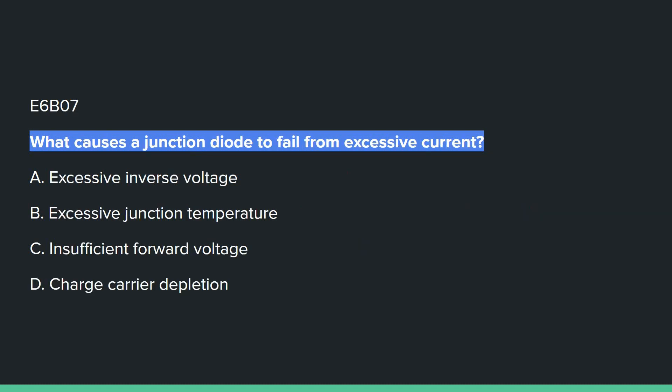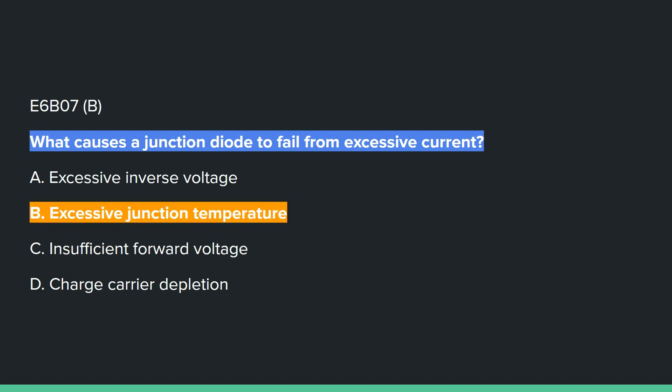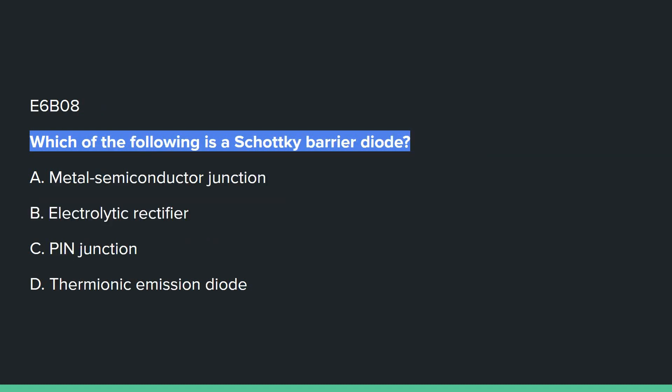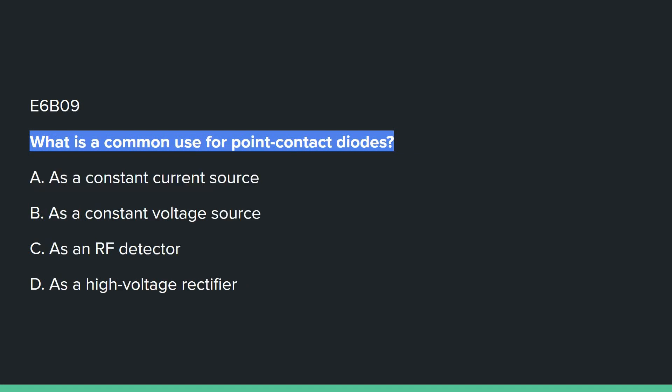E6B07: What causes a junction diode to fail from excessive current? B, excessive junction temperature. E6B08: Which of the following is a Schottky barrier diode? A, metal semiconductor junction. E6B09: What is a common use for point contact diodes? C, as an RF detector.